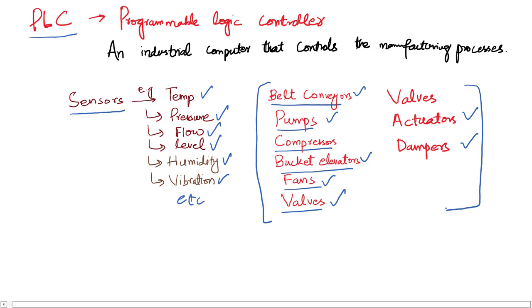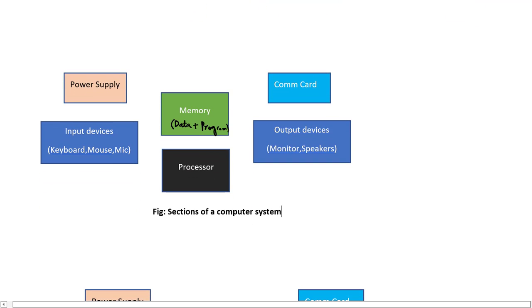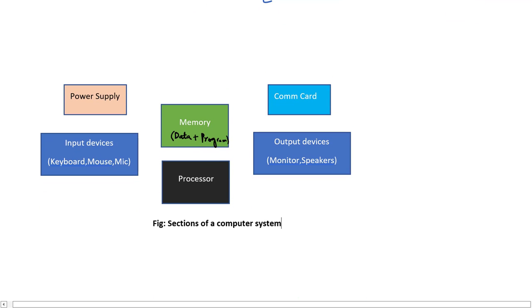This is how a process works. To further understand the working of a PLC, let me draw an analogy between the PLC and a typical computer system. In a typical computer system there are main sections like power supply, input devices like keyboard, mouse, and mic.